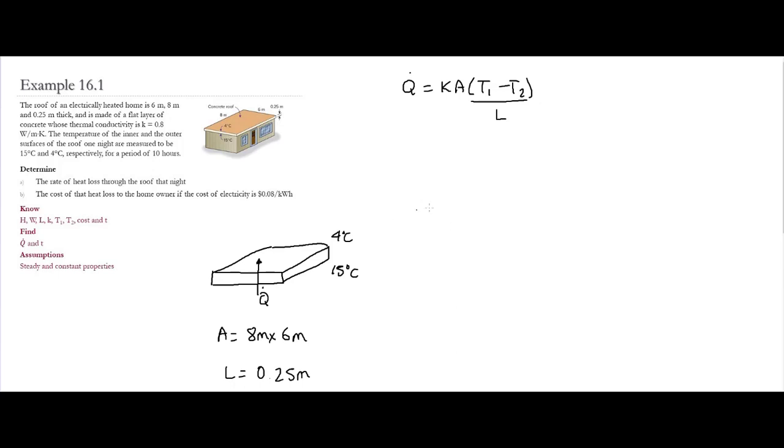So now let's replace the information that we have. Q dot is equal to 0.8 watts per mK. The cross-sectional area is 8 meters by 6 meters. The values of T1 and T2 are going to be 15 minus 4 Celsius, and the distance in between is going to be 0.25 meters.